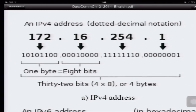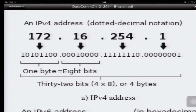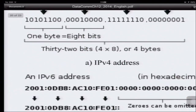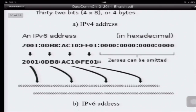In IPv4, if you have the address 172.16.254.1, then 172 converts to 10101100 in binary. So you can convert to binary; 16 is converted similarly. Each decimal number is 1 byte equal to 8 bits, so the total consists of 4 bytes. Now let's look at an IPv6 address, which uses hexadecimal format.